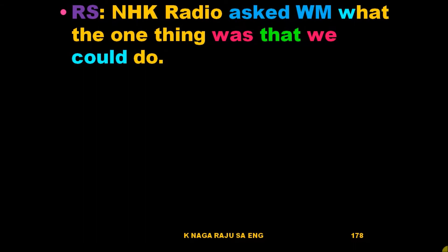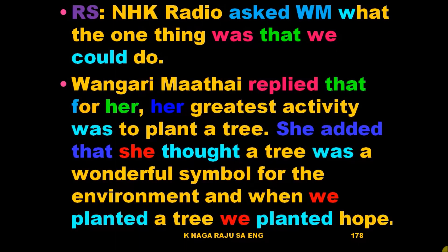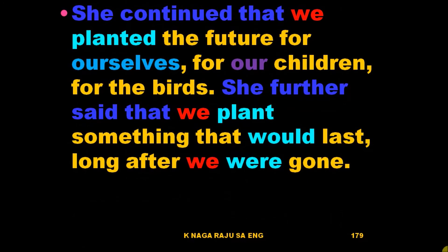Now reported speech and indirect speech: NHK Radio asked Vangari Matai what the one thing was that we could do. Vangari Matai replied that for her, her greatest activity was to plant a tree. She added that she thought a tree was a wonderful symbol for the environment, and when we planted a tree, we planted hope. She continued that we planted the future for ourselves, for our children, for the birds. She further said that we planted something that would last long after we were gone.